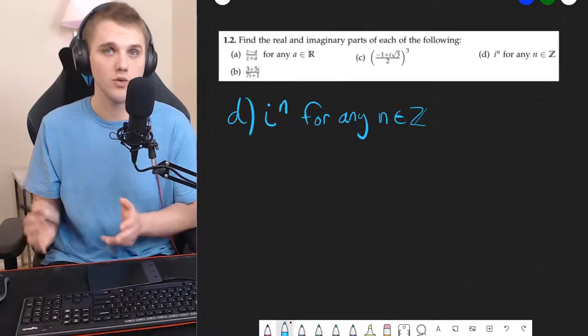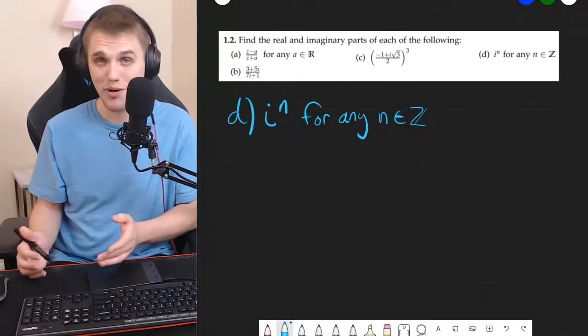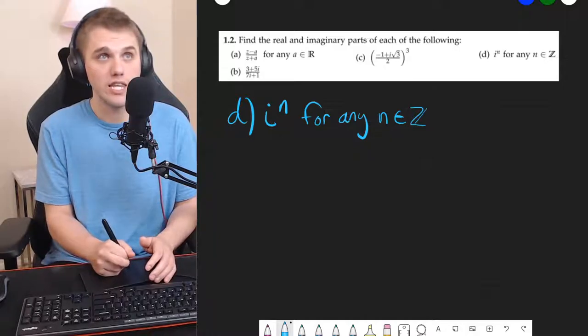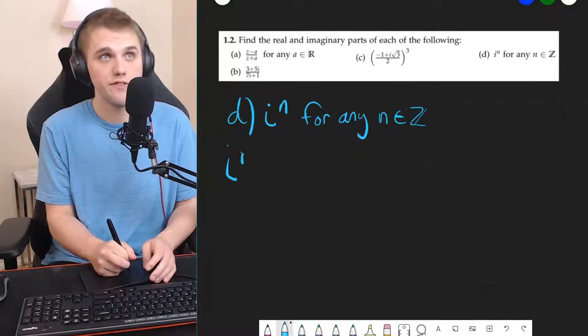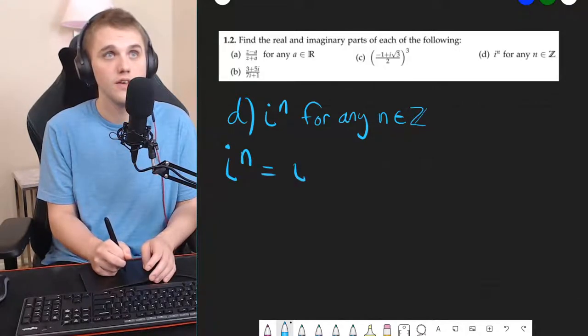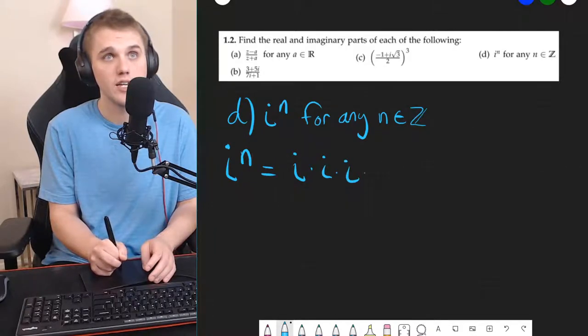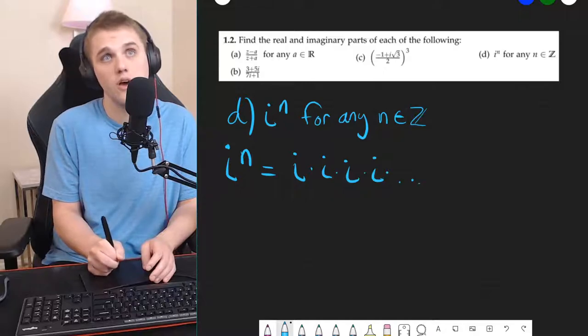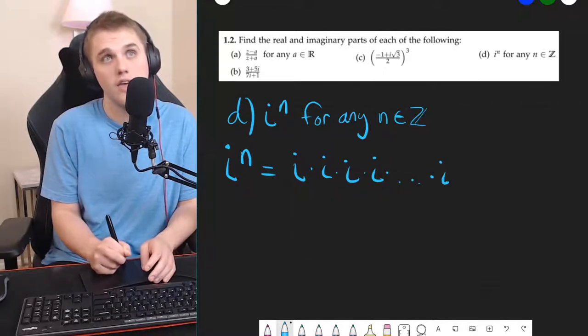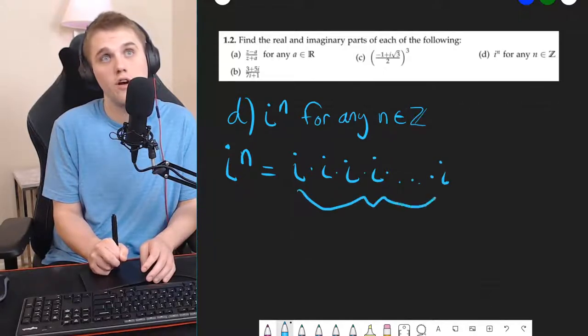So, how do we find the real and imaginary parts to this complex number? Well, first, let's identify what i to the n is. The definition of i to the n is i times i times i times i and so on times i, where there are n i's here.